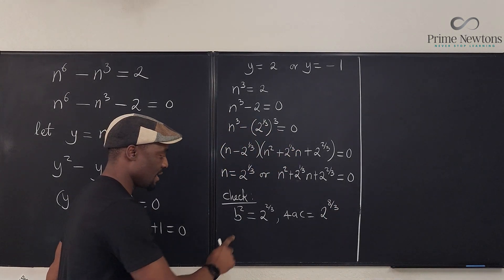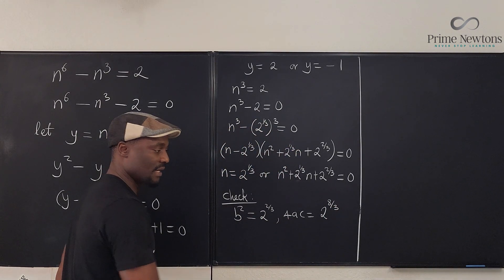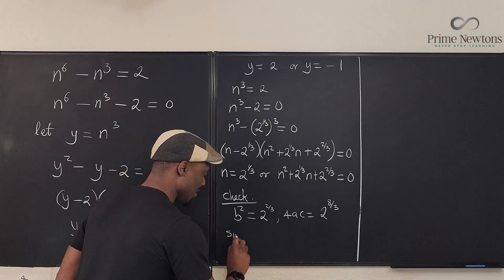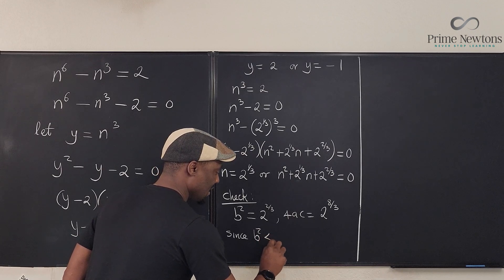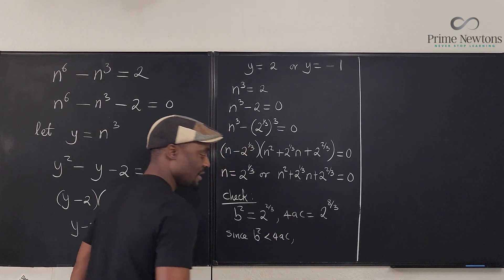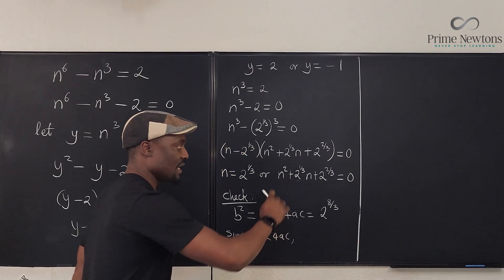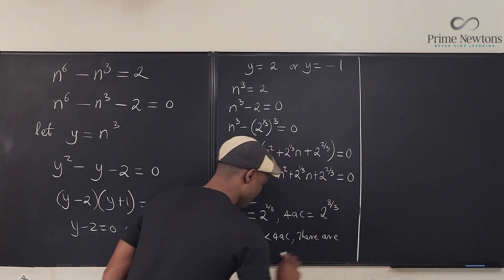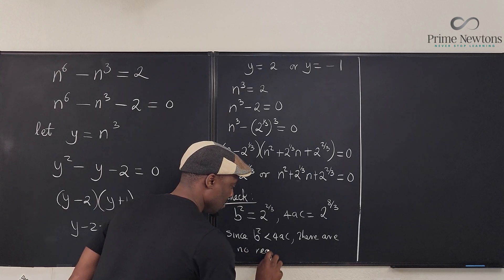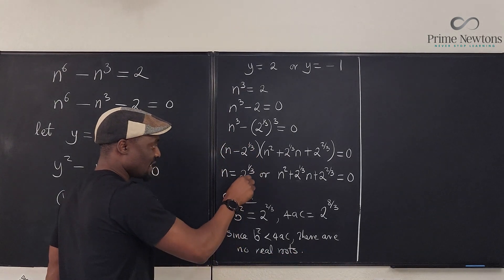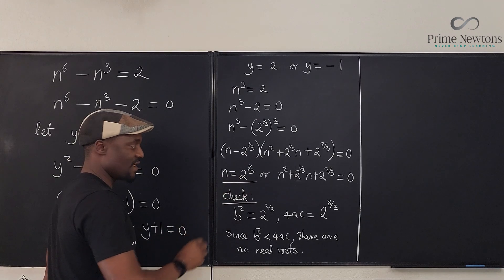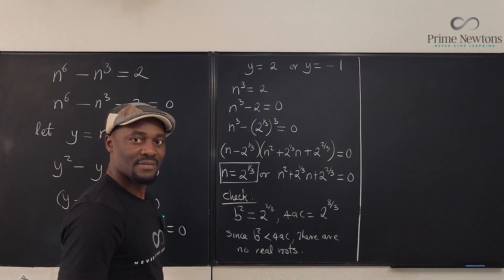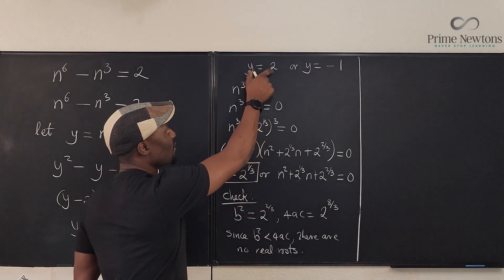So, which is bigger? Is it b squared or 4ac? Clearly, 4ac is bigger than b squared. So, since b^2 is less than 4ac, this solution cannot be real. There are no real roots. So, this is the only real root we can get here. We've got one option here. Let's move on. So, we're done with this one. Let's go to this one.